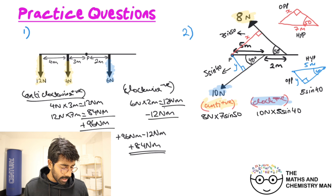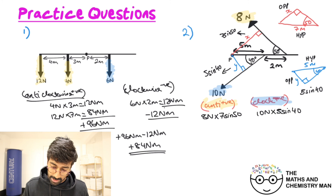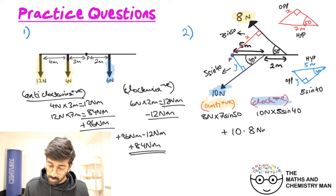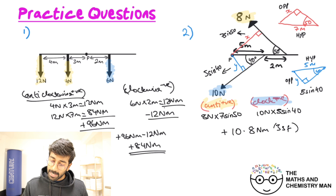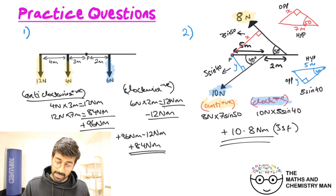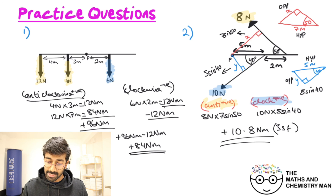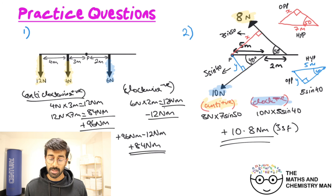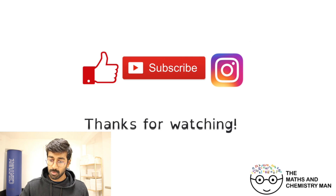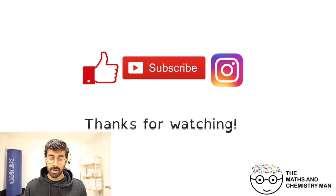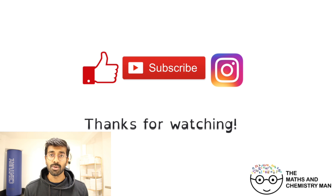Adding them both together gives positive 10.8 Newton meters to three significant figures. The positive sign tells us it is rotating in the anti-clockwise direction. Hopefully you got all of those — well done if you did. Thank you for watching. That's resultant moments covered across several scenarios, and next we'll use this to introduce something new called equilibrium in the next video.